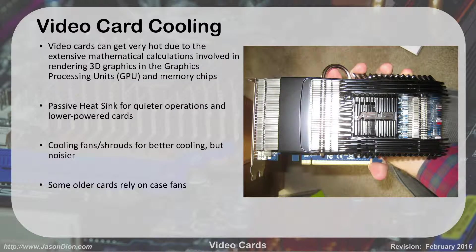Here's another example of a card. This one also has a radiator on it. It's an ASUS card — the processor is underneath the ASUS logo — and it has a cooling system on it as well. These cards get really, really hot because they're doing the most complex mathematical problems the computer performs. They're working harder than your actual CPU. They handle all the 3D graphics rendering, and they use a graphics processing unit with their own dedicated memory on the card.